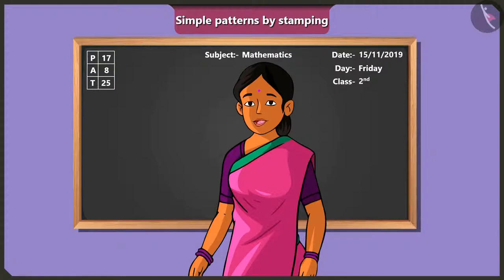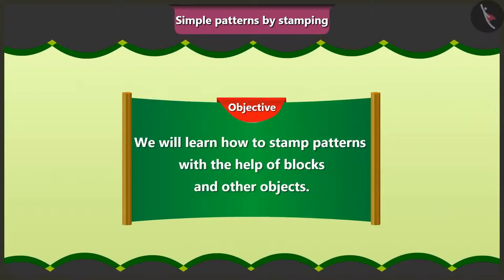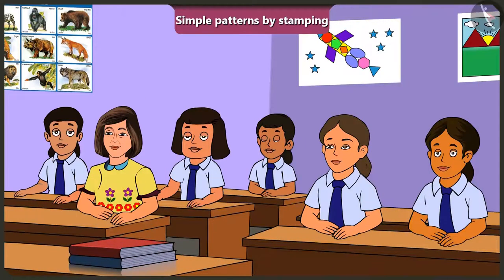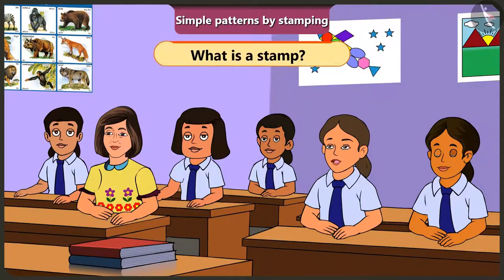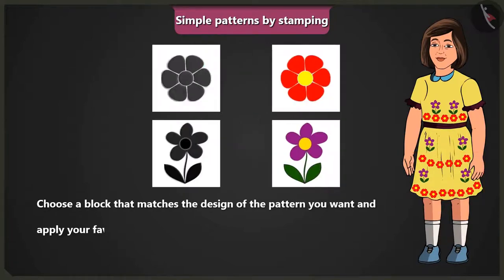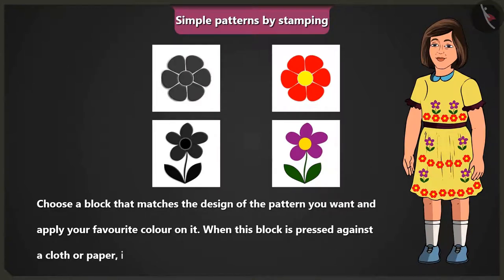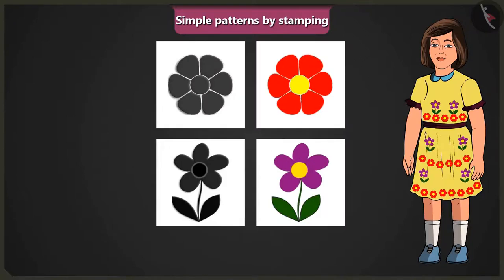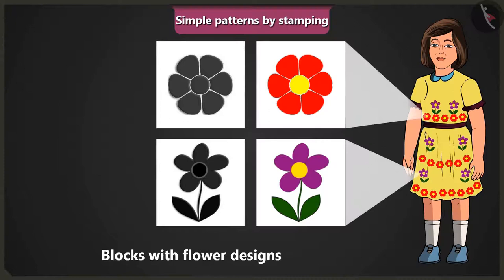Make a pattern using a stamp. How is that done? All right, let me explain it to you. So children, today we will learn how to stamp patterns with the help of blocks and some other objects. Choose a block that matches the design of the pattern you want and apply your favourite colour on it. When this block is pressed against a cloth or paper, we call it a stamp. Look at Jimmy's frock — the pattern is made by stamping a coloured block which has the design of a flower on it.